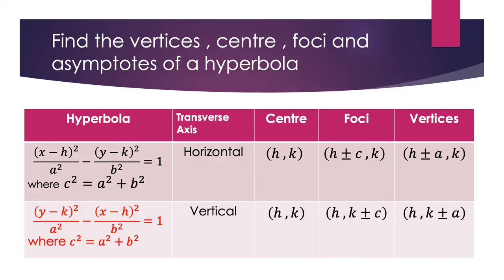The strategy to find the vertices, center, foci, and asymptotes of a hyperbola: the standard equation is (x minus h)² over a² minus (y minus k)² over b² equals 1. Since x is positive, the transverse axis is a horizontal line. The center is at coordinates (h, k) and the vertices are at coordinates (h ± a, k).